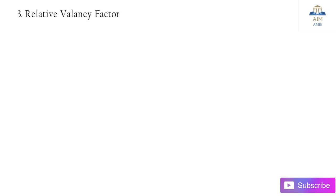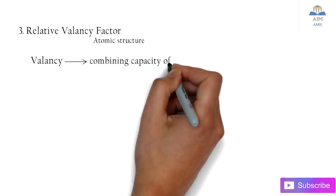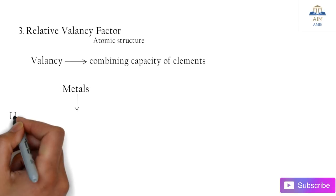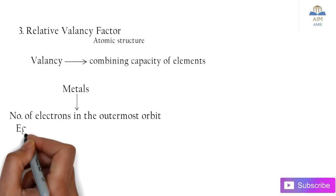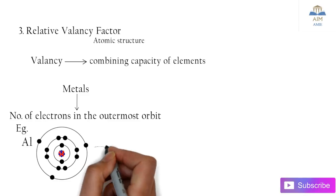Third is the relative valency factor. At the atomic structure level, valency plays a very important role in the combination of two metals. Valency is the combining capacity of elements. In case of metals, it is the number of electrons in the outermost orbit. For example, aluminium has an electronic structure of 2+8+3. Three electrons are in the outermost orbit, so the valency of aluminium is 3.